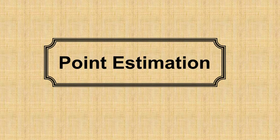In real-life situations, the population parameter is unknown because it is not possible to collect data from every member in the population. Normally, we collect sample data, and based on the information obtained from the sample data, we can then estimate the population parameter. There are two types of estimation.